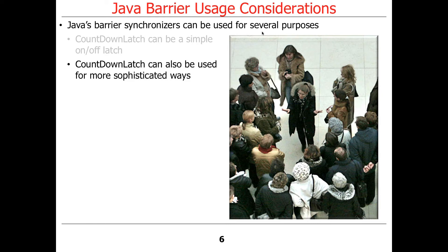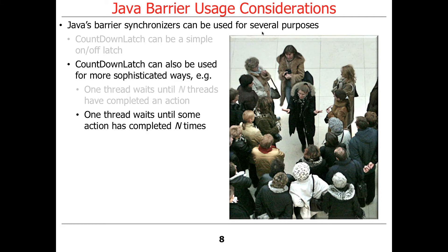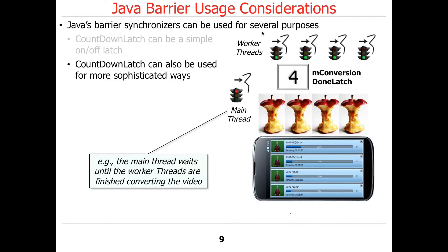You can also use a countdown latch in more sophisticated ways. You can have one thread wait for n threads to complete an action, or one thread can wait until some action is completed n times. The key thing to remember about countdown latch is it's really based on events, not threads — it's just an action that completes n times. For example, the main thread waiting for all worker threads to complete is a kind of exit barrier-like approach, where only when all those threads are done will the main thread be able to proceed.